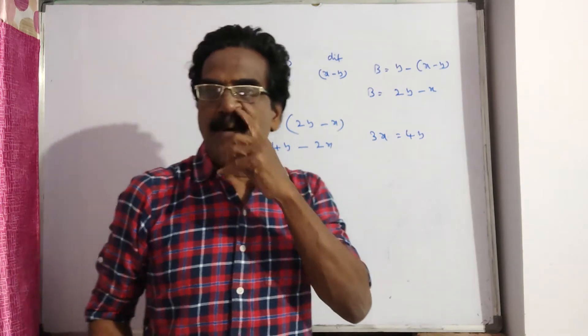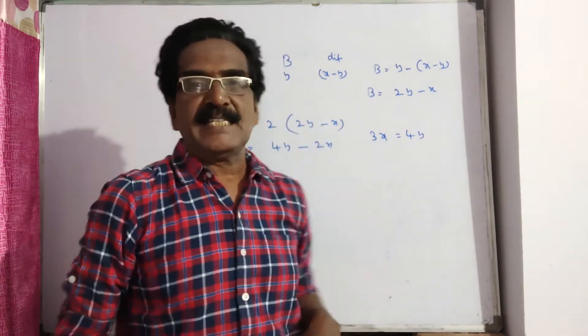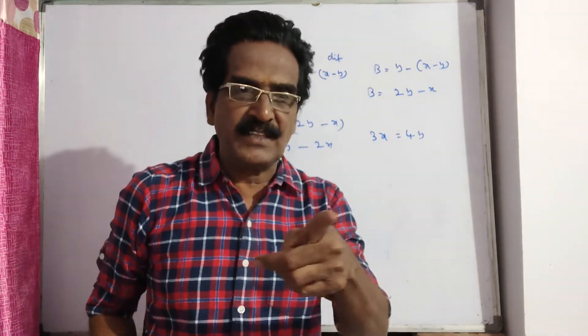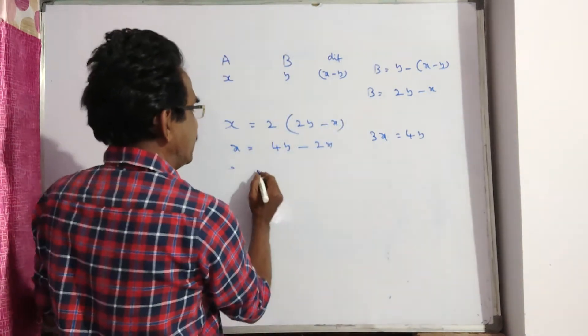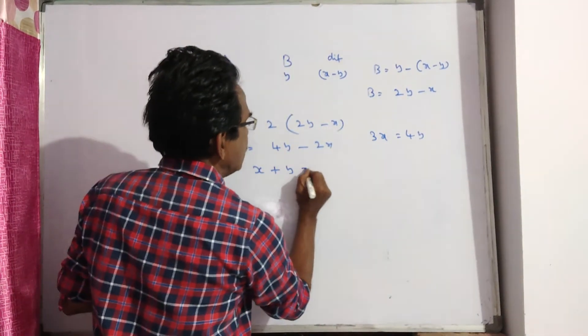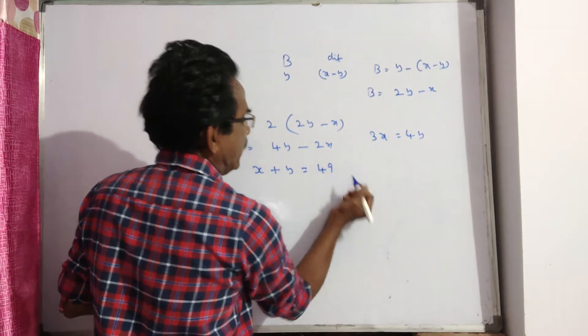Now it is also given that sum of the ages is 49 years. That is X plus Y is equal to 49 years.